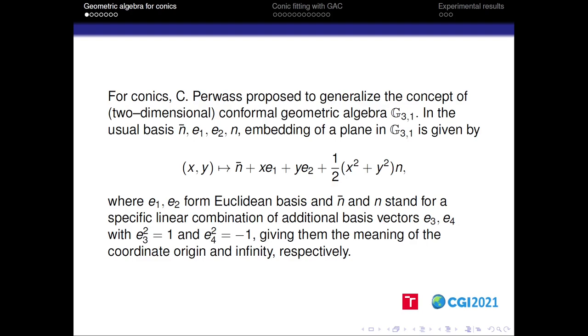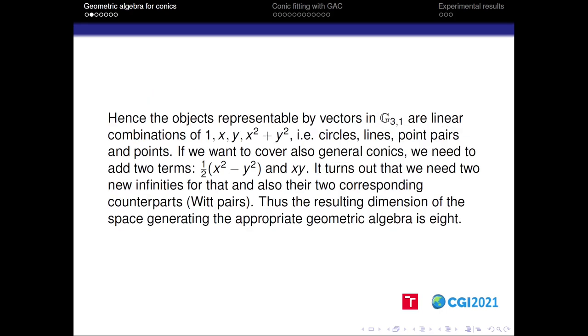Consequently each point of a Euclidean plane can be embedded into G31 by this formula. So the objects representable by vectors in G31 are linear combinations of these four terms: 1, x, y and x squared plus y squared. So these objects are only circles, lines, point pairs and points.